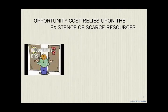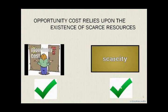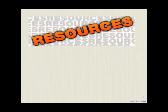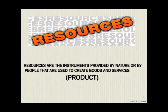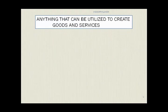We can conclude that opportunity cost relies upon the existence of scarce resources, so opportunity cost and scarce resources are correlated. Resources are the instruments provided by nature or by people that are used to create goods and services, which is termed as the product. A product is anything that can be utilized to create goods and services.